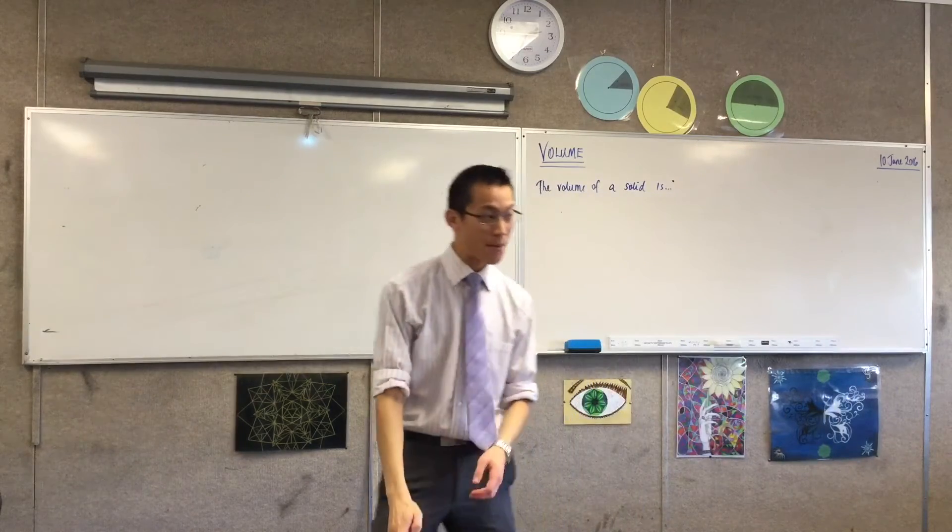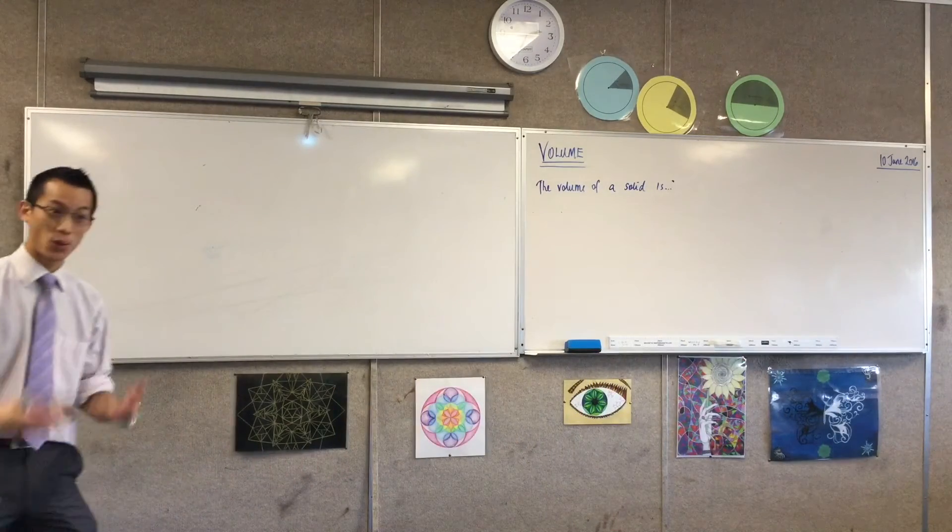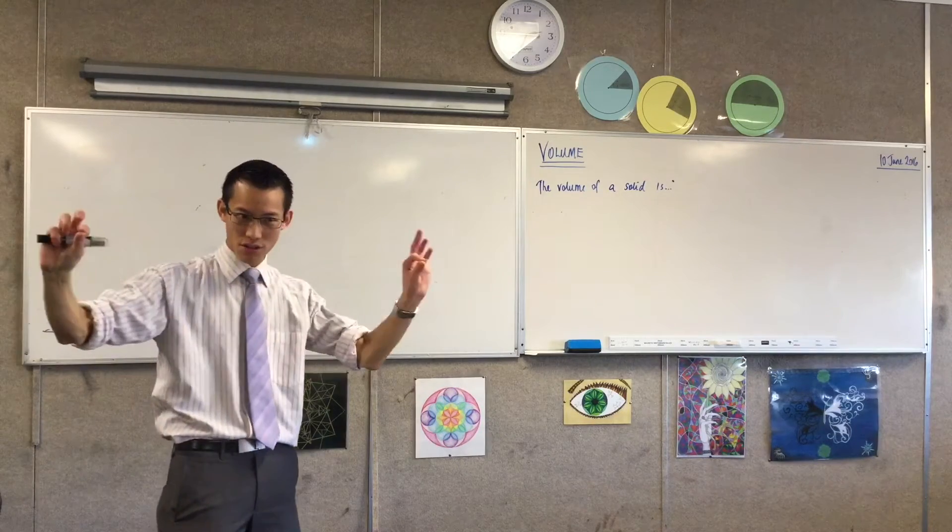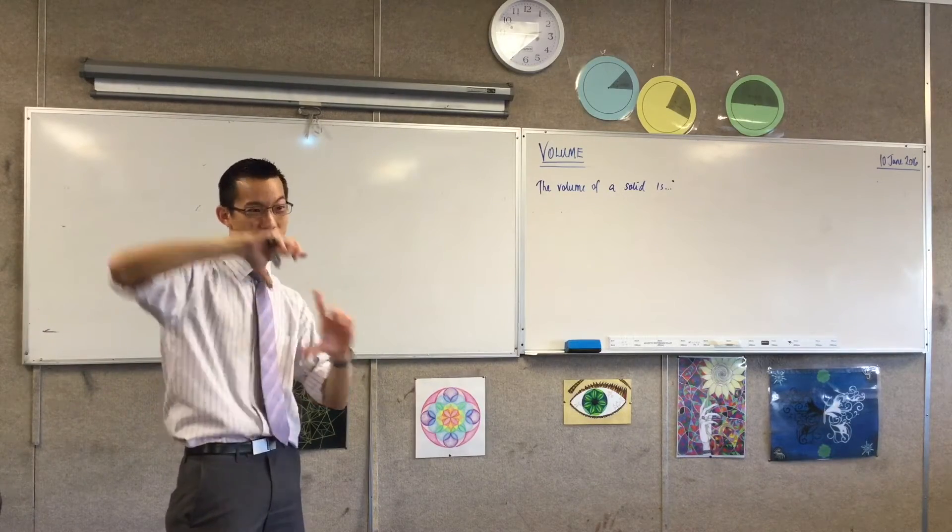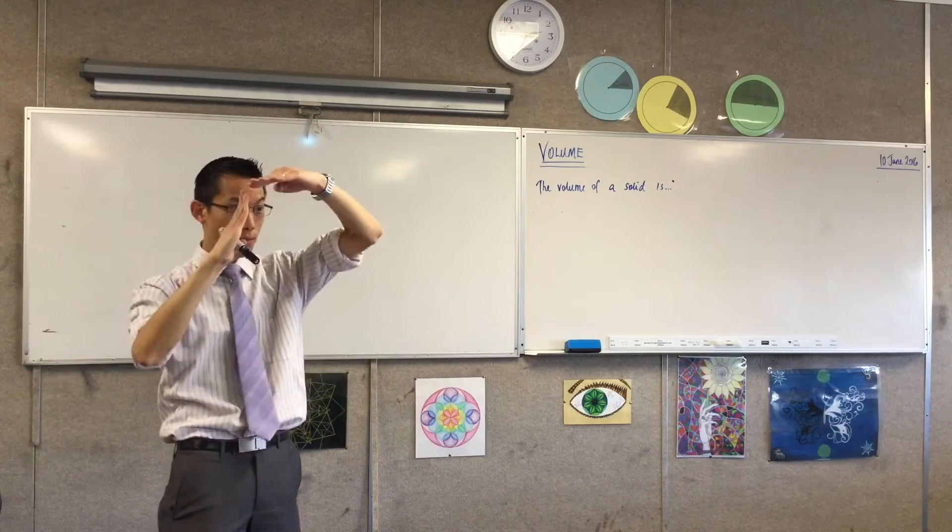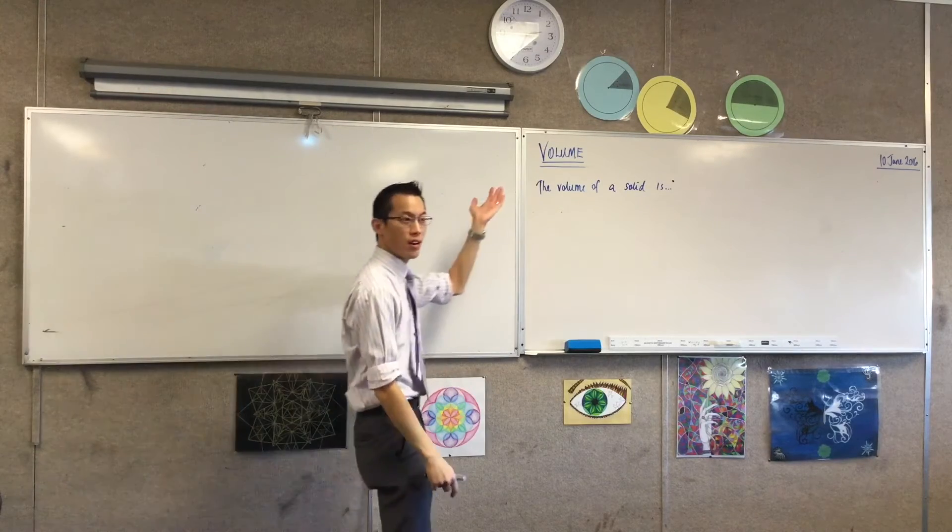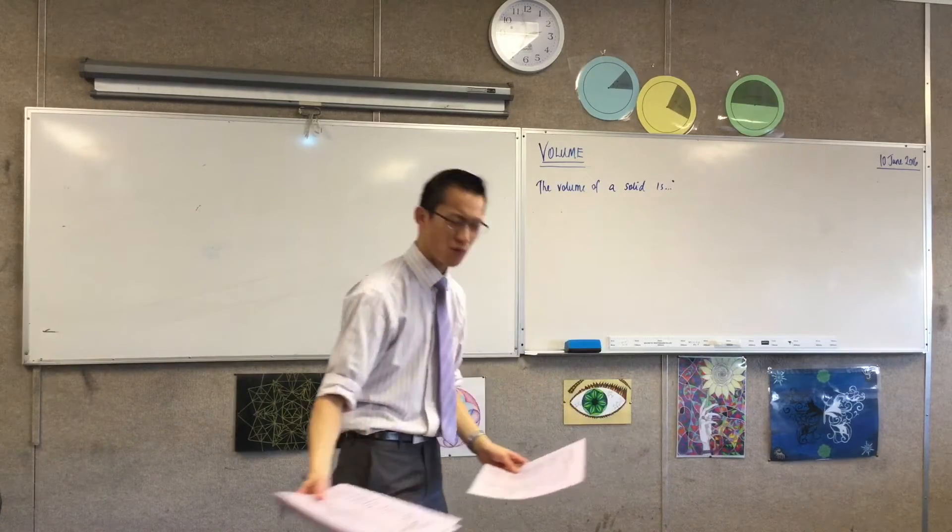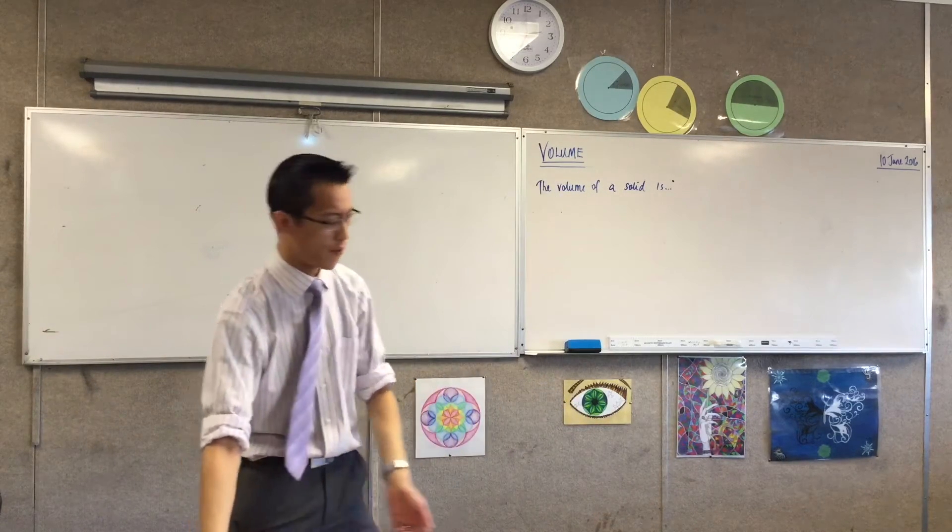In our very first lesson on MM1, when we were looking at all the units, we said you could measure lengths, which were one dimensional, you could measure areas, which are two dimensional, and then you can measure volumes, right? So how would you finish this sentence? The volume of a solid is, how would you define that to someone who's never heard the word volume before?